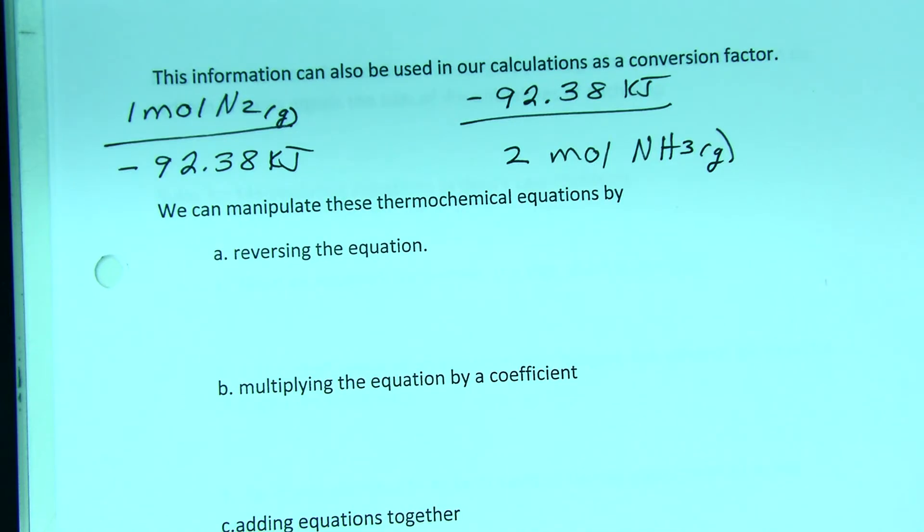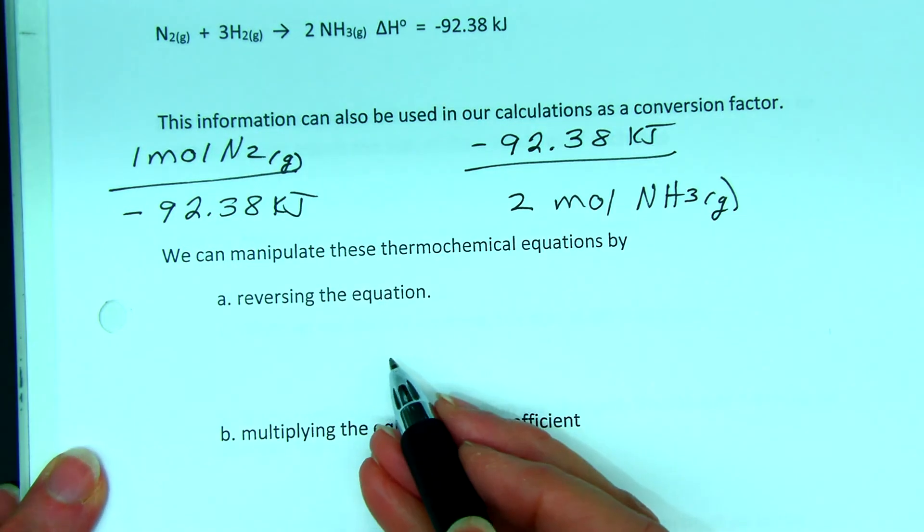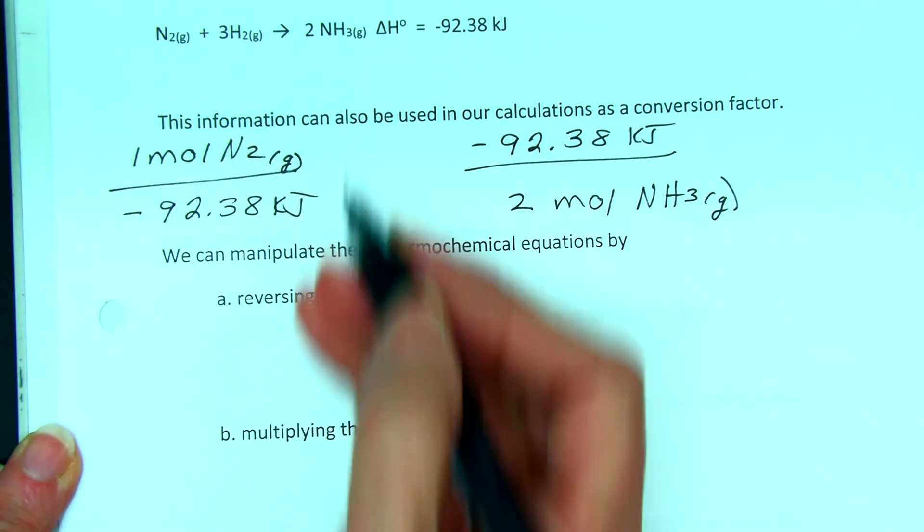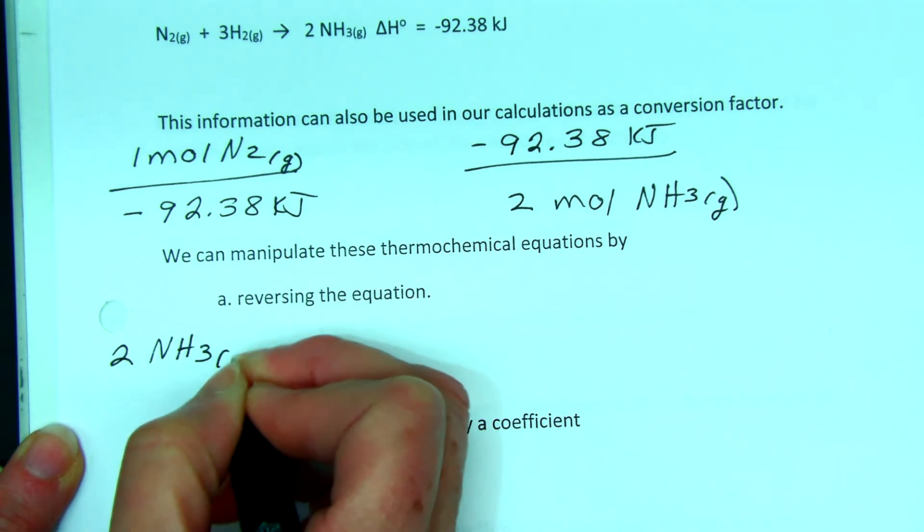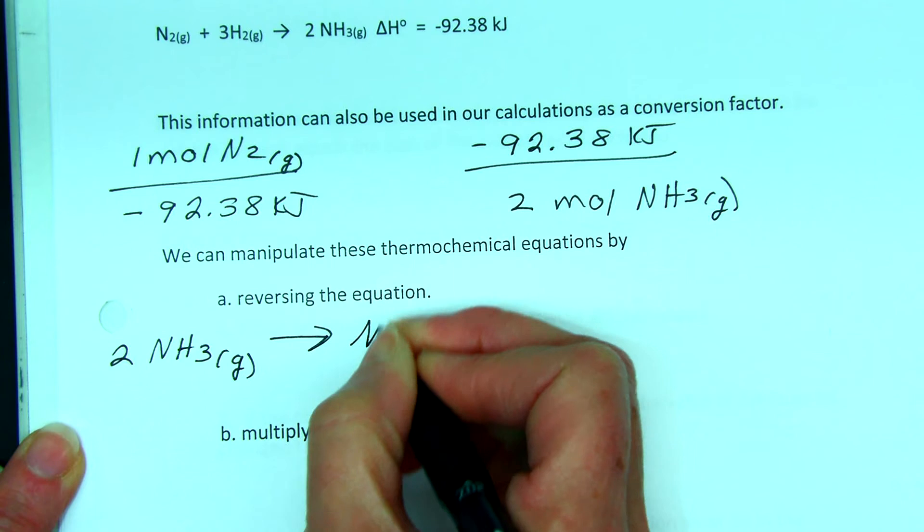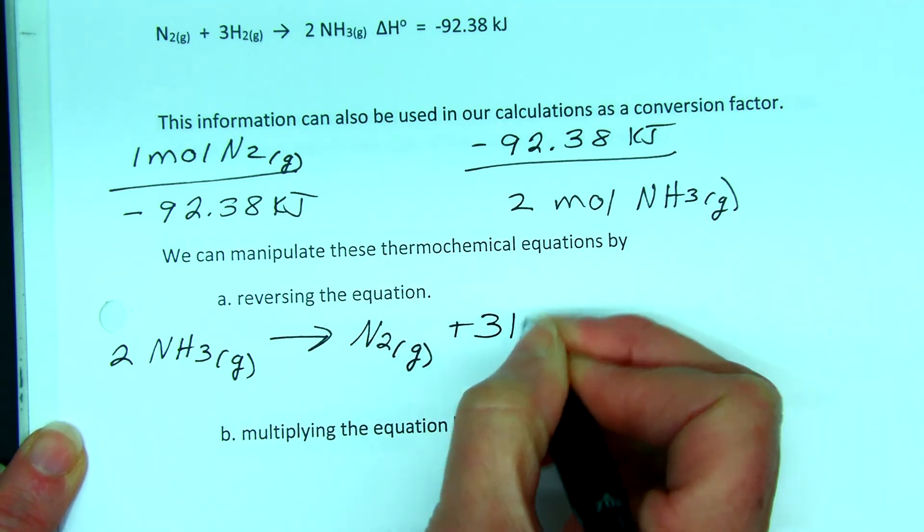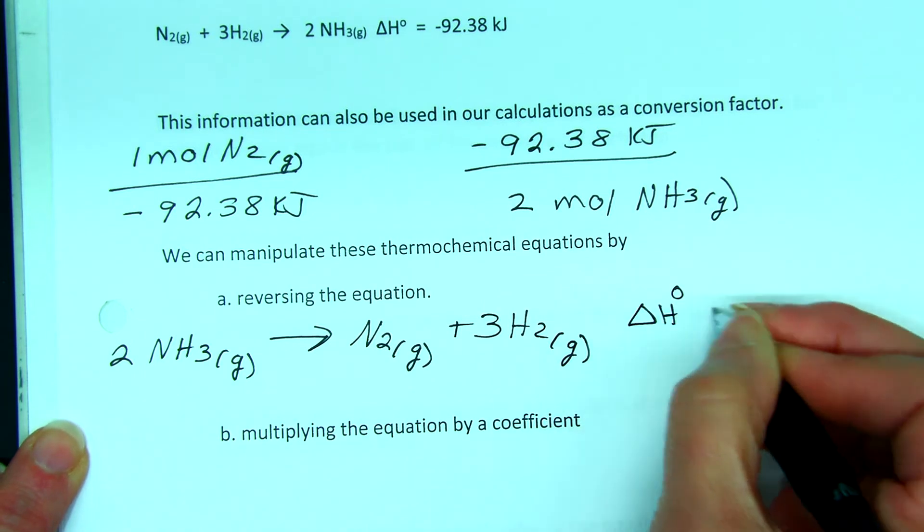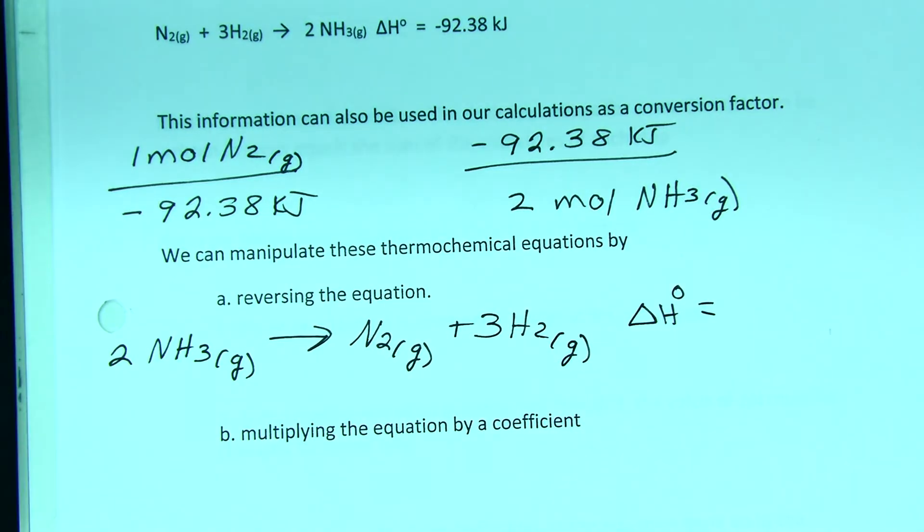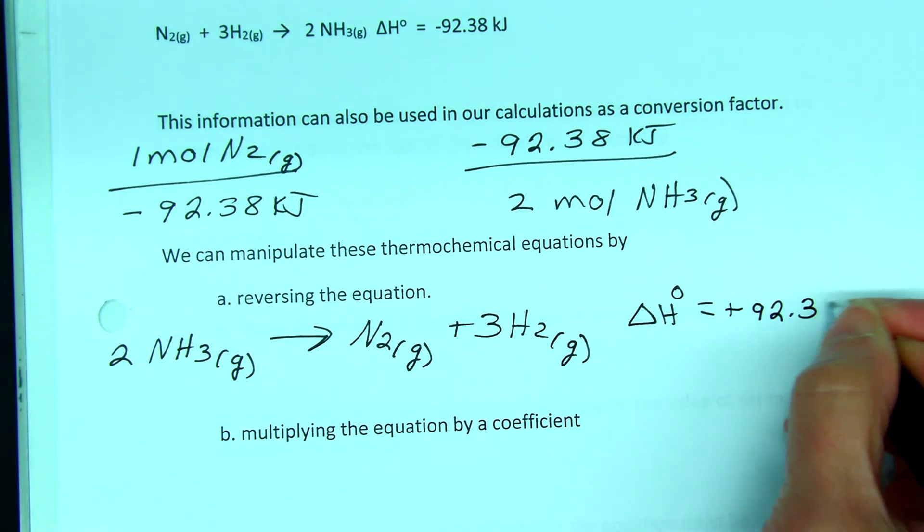So if we reverse the equation, we take our original chemistry up here and we turn it around. Now, instead of making ammonia, I'm going to start with two ammonia gas and I'm going to allow that to break down into nitrogen gas plus three hydrogen gas. Now, I still have this enthalpy term, but because I turned the equation around, I changed the sign. So this is now positive 92.38 kilojoules.